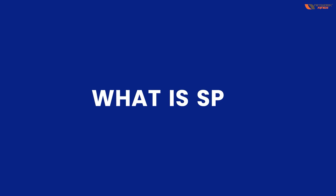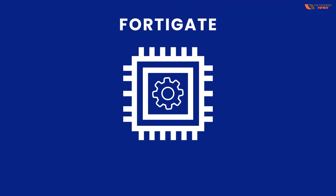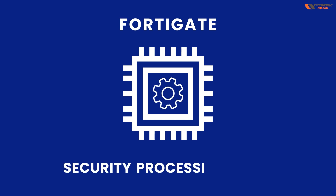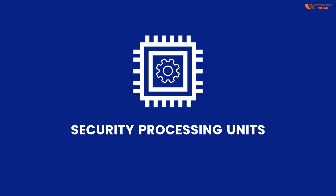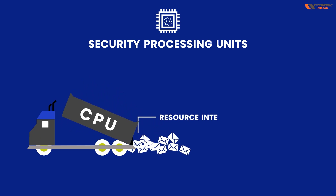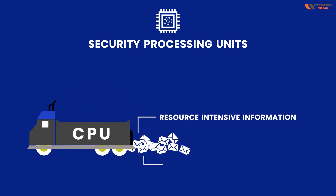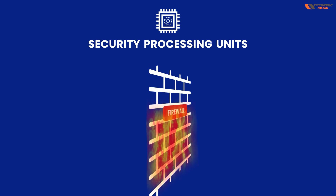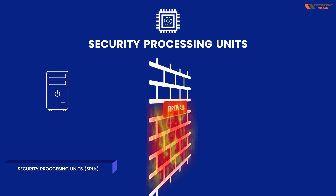Now, what exactly is an SPU? Most FortiGate models have specialized acceleration hardware called Security Processing Units. These SPUs can offload resource-intensive traffic from your CPU. That is the unique feature of FortiGate.